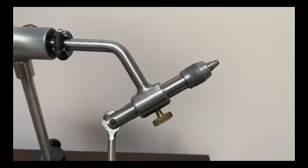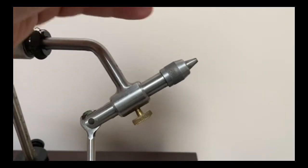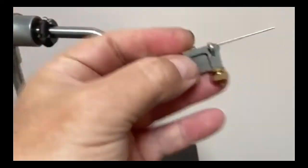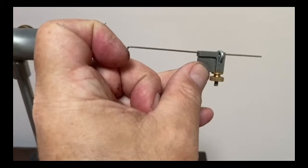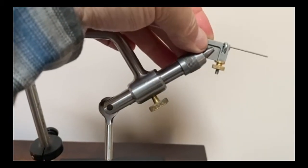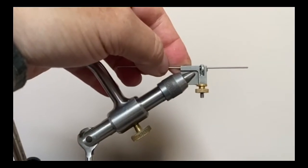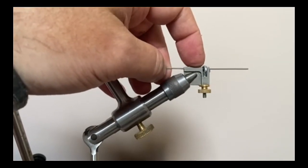The other thing that's really useful if you do tie tube flies is it will accommodate the HMH tube adapter really easy. So that just fits into there like that. Then you can fit your tube on there and tie away.